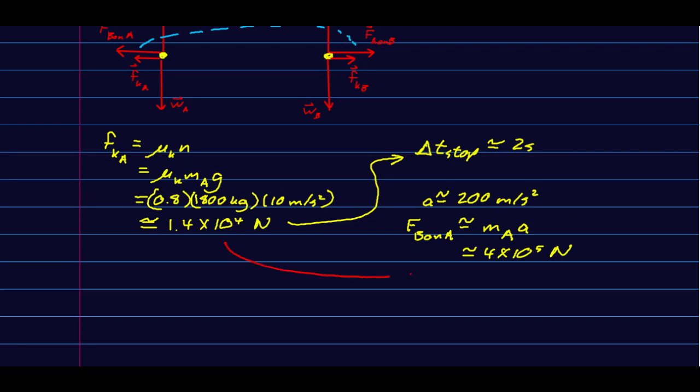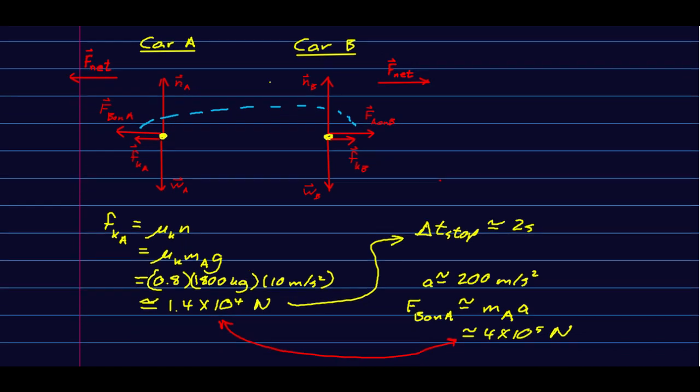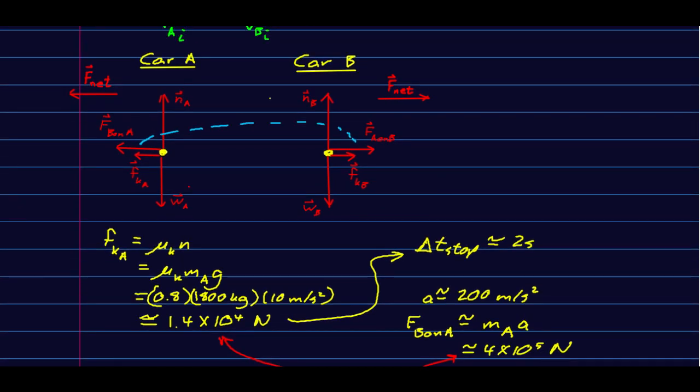So compare those. That friction force is a big force, but the force that B is exerting on A is more than an order of magnitude bigger. So it would be fairly reasonable for us, if we don't need high precision, to neglect the kinetic frictions.